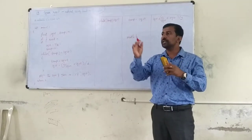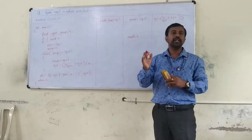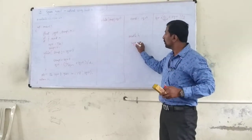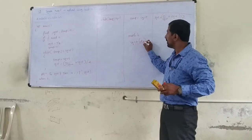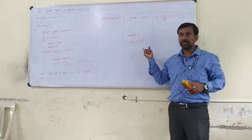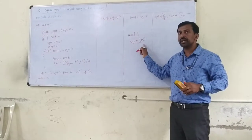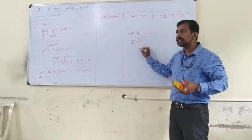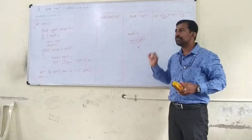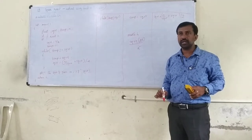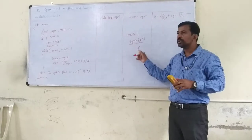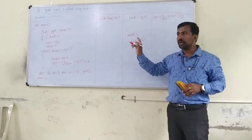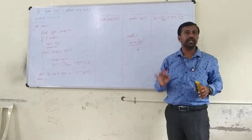It helps us in coding and reduces the length of the code. There is one built-in function called sqrt — for example, sqrt(25). This built-in function returns the result 5. I am not writing any code to find out this 5; there is a built-in function called square root — use that one and you get the output.